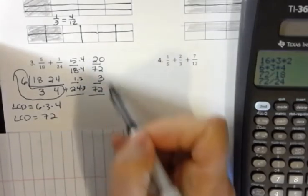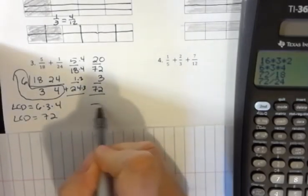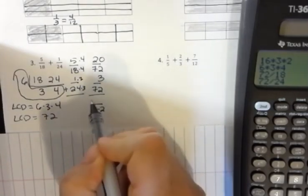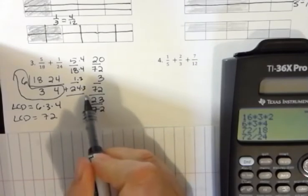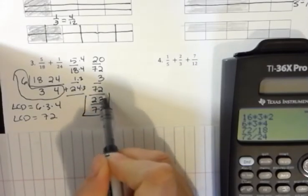now, like fractions, keep the denominator the same and add the numerators. That gives me 23. If I could reduce, I would. So far, I haven't had to reduce any of these fractions. But my answer here is 23 over 72.